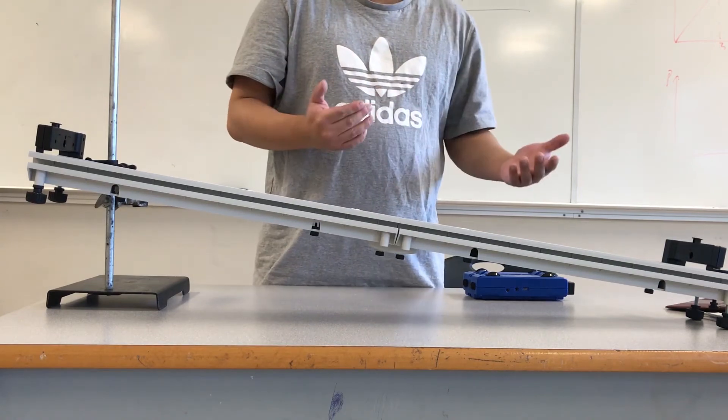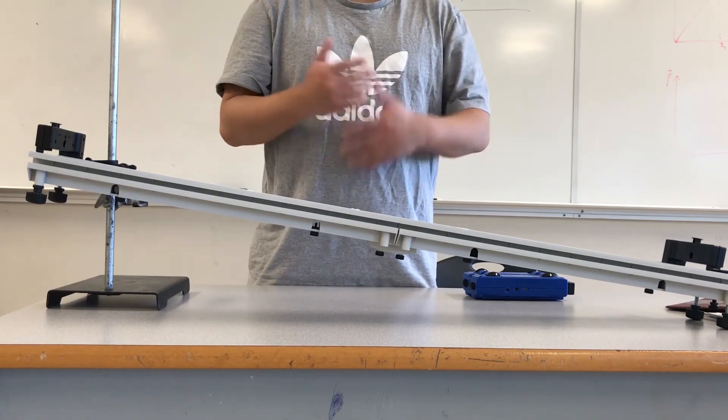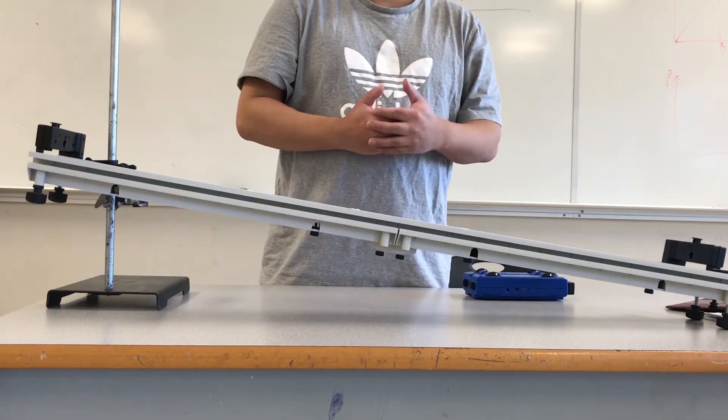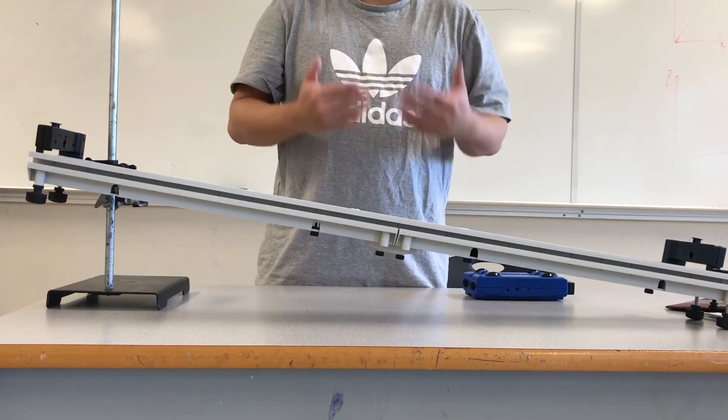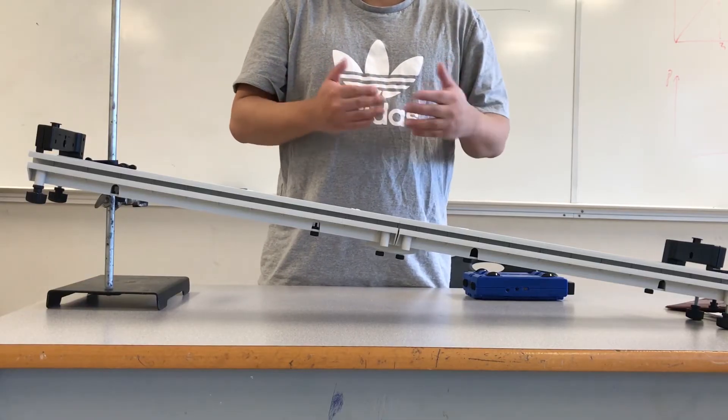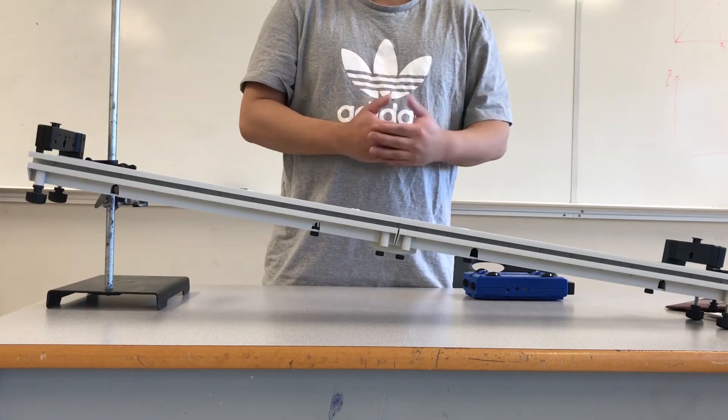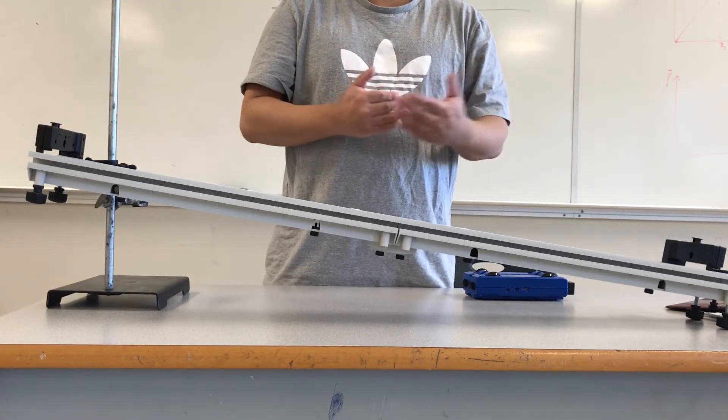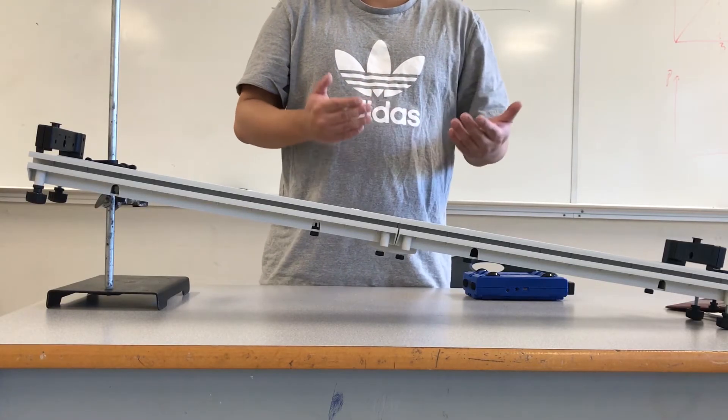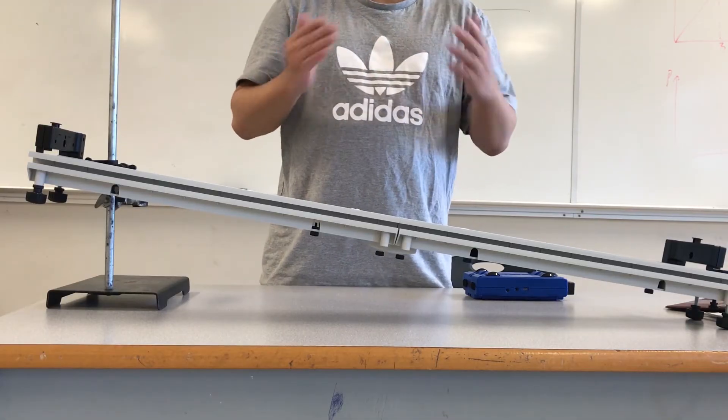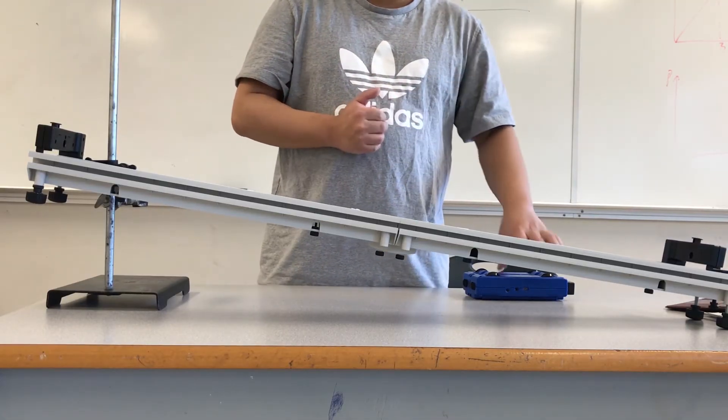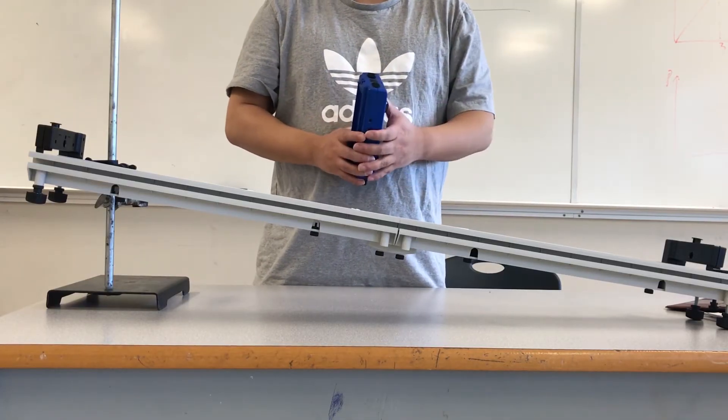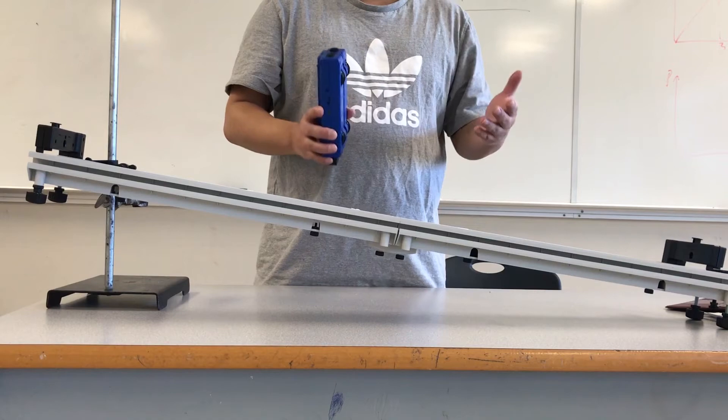At this point, we have derived the six kinematics equations mathematically. However, physics is an experiment-based subject, which means all the theories should be able to be tested by experiments and can be verified by experimental data. And this is what we're going to do today. So we're going to be using the smart card to do an experiment to verify the kinematics equations.